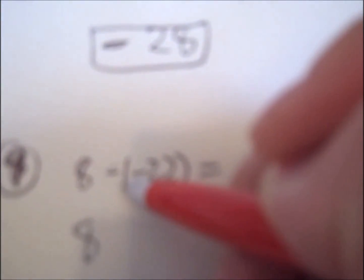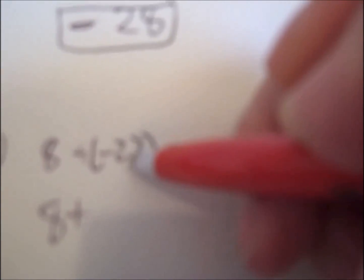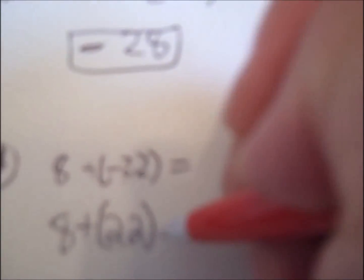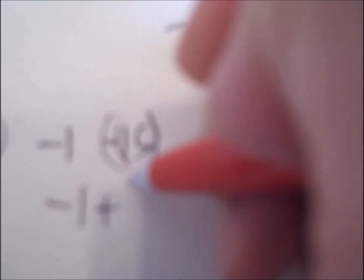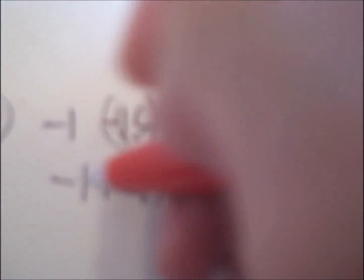Subtracting integers is adding the opposite. Instead of subtracting, I'm adding the opposite. The opposite of negative 22 is positive 22. You can even put it in parentheses if that helps. Negative to positive. 8 plus 22 is 30. Next, still subtracting, I add the opposite. The opposite of 15, not negative 15, the opposite of 15. This negative is a plus now. The opposite of 15 is negative 15. Now it's negative 1 plus negative 15. They have the same sign, negative. I add them together, 16, negative 16.